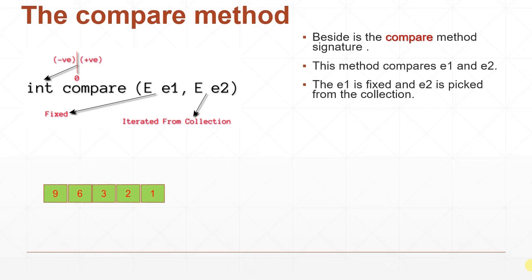Consider a collection — a TreeSet of integers — containing elements 9, 6, 3, 2, 1. We want to insert a new element 7. To maintain the sorting order, Java will call our compare method. e2 is the element taken from the collection (the second parameter), and e1 is the fixed element we want to insert. Java may call the method multiple times until it finds a slot for e1 in the existing collection.